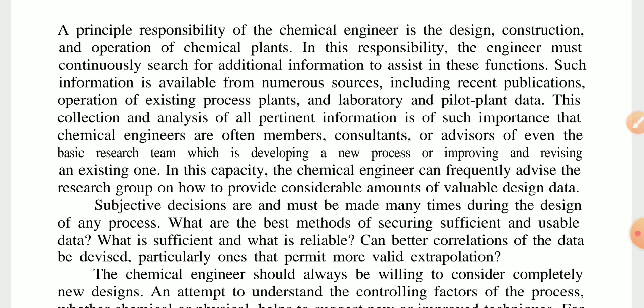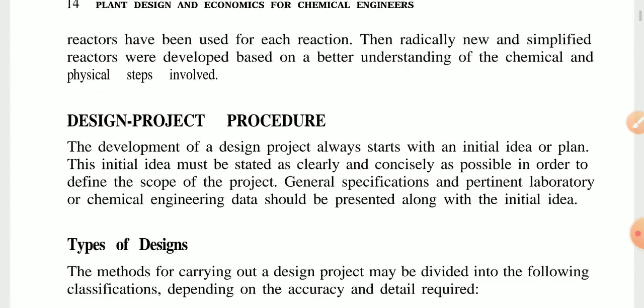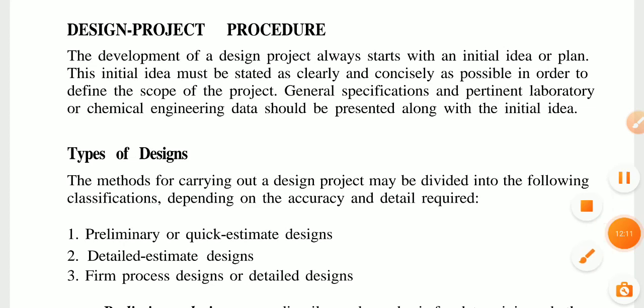Such information is available from numerous sources, including recent publications, operation of existing process plants, and laboratory and pilot plant data analysis. Regarding the design project procedure: the development of a design project always starts with an initial idea for any plant. This initial idea must be stated as clearly and concisely as possible in order to define the scope of the project, and general specifications and pertinent laboratory or chemical engineering data should be presented along with the initial idea.